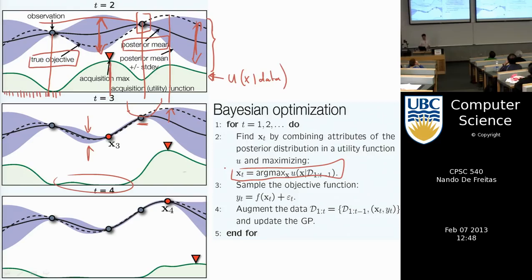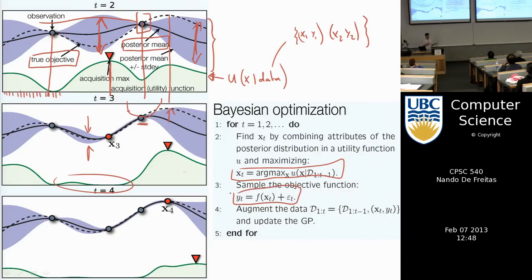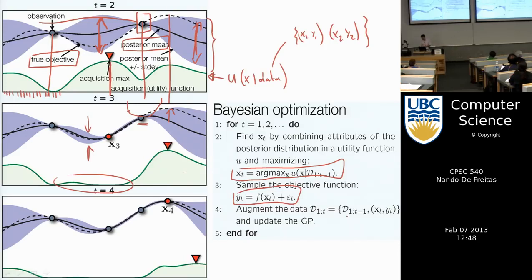Step three: once I've chosen a new x, I evaluate it — I try it and the function evaluation comes back with some noise. Then I simply augment the data set with the new point (x, y) and repeat the process.